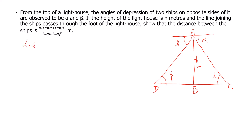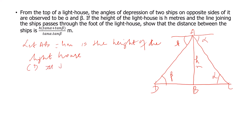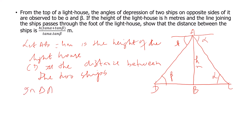Let AB equal H meters be the height of the lighthouse, and CD be the distance between the two ships. In triangle ABD, tan beta equals opposite by adjacent, which is AB by BD, so tan beta equals H by BD. This is equation 1.